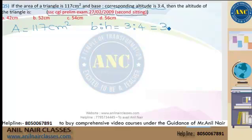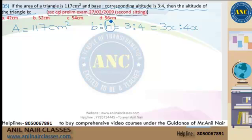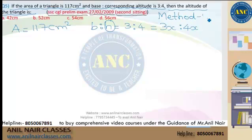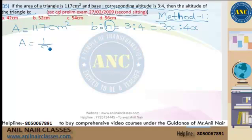In Method 1, I take base as 3x and height as 4x. The question asks: what is the altitude of the triangle? Now, Method 1 uses variables to solve the question — that is the approach I usually label as Method 1, which is the more standard algebraic method. The area of a triangle is half into base into height.